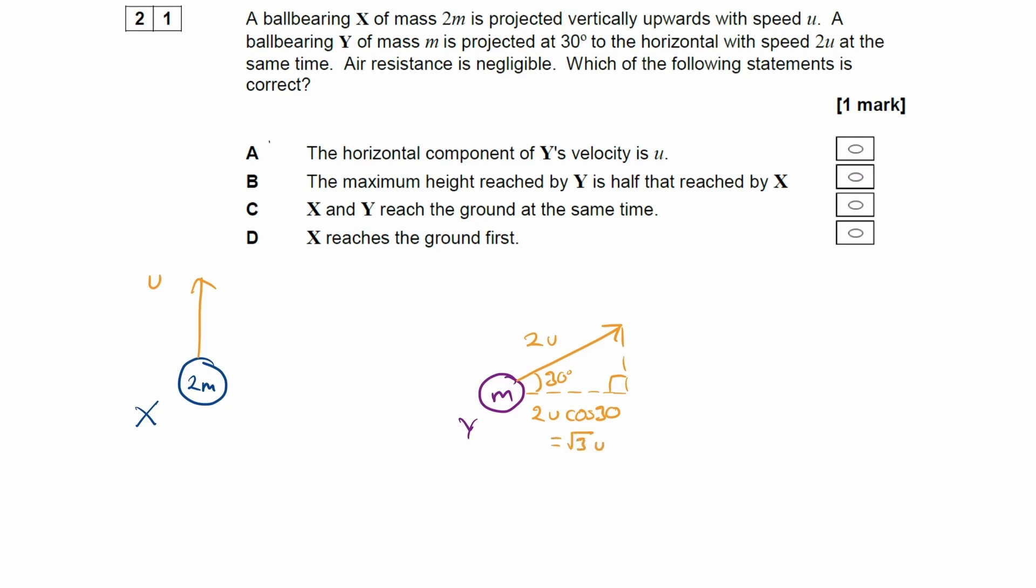So therefore, it is not option A. The horizontal component of Y's velocity is root 3u, not u.